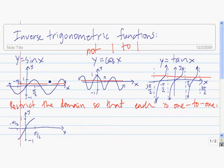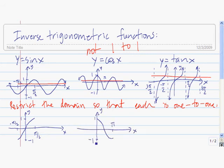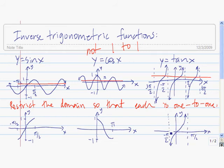While we could have chosen any portion of these graphs that we wanted, the convention is to use the interval from negative pi over 2 to pi over 2 for the sine function. This passes the horizontal line test, so this function with this restricted domain has an inverse that's a function. For cosine, we restrict the domain from 0 to pi, so it's one-to-one. And finally, for tangent, we restrict the domain to negative pi over 2 to pi over 2.